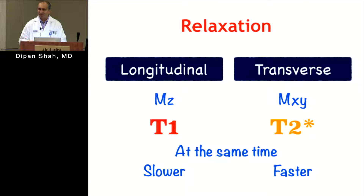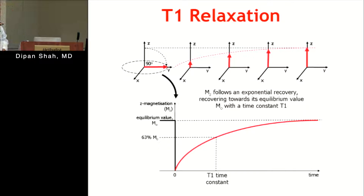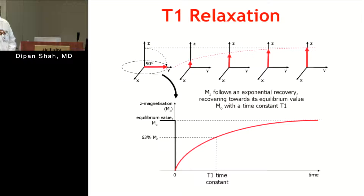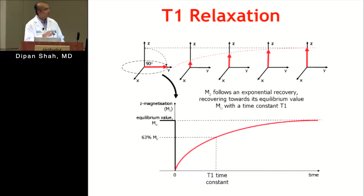Here's an example of T1 relaxation. If you tip a proton from upright with a 90-degree flip angle into the transverse plane, the component in the longitudinal plane at the start is zero. Over time, that net vector grows back, and the rate at which it grows is related to T1. T1 time is defined as the amount of time it takes to regrow to 63% of the intrinsic or equilibrium magnetization.